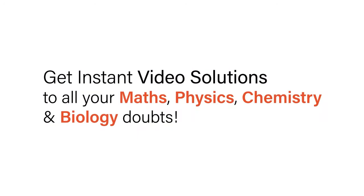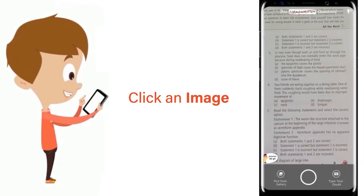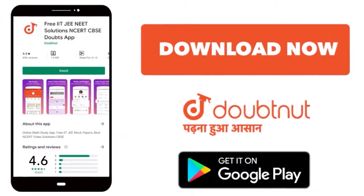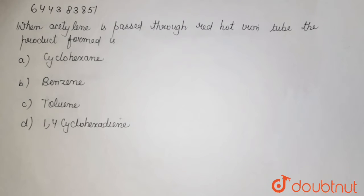With Doubtnet, get instant video solutions to all your maths, physics, chemistry, and biology doubts. Just click the image of the question, crop the question, and get instant video solution. Download Doubtnet app today. When acetylene is passed through red hot iron tube, the product formed is...